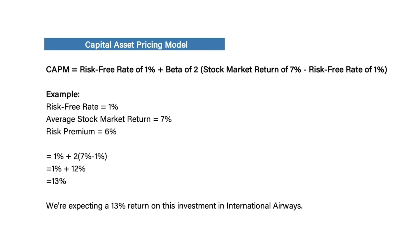Let's plug these numbers into the formula. Beta for this stock would be 2, because it's twice as volatile. Then we take the difference between the stock market return and risk-free return — that's 6%, which is our risk premium. We multiply 2 by 6, so that part is 12%. Since we took out the risk-free return to calculate this section, we need to add it back in at the very end. So we add the 1% to the 12%: 1% plus 2 times (7% minus 1%) equals 1% plus 12% equals 13%.